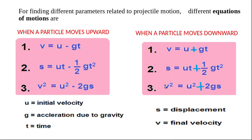For finding different parameters in projectile motion, we can make use of equations of kinematics. There are two cases: when the particle moves upward and when the particle moves downward. When the particle moves upward, acceleration due to gravity is taken as a negative sign. The key variables are: u is the initial velocity, g is the acceleration due to gravity, t is the time taken, s is the displacement of the particle, and v is the final velocity.